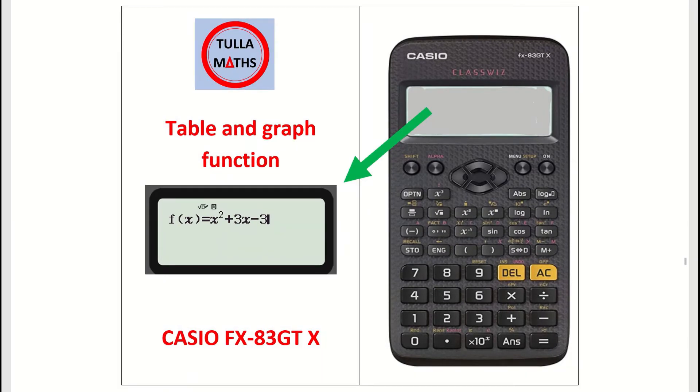In this video, we're looking at how to use the table or graphing function on our new Casio calculator in order to find the points from a quadratic equation, which we can then plot onto a graph. So it's a quicker way of finding those coordinates.